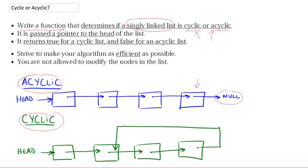So you're being passed a pointer to the head of the linked list which you have to analyze. This allows you to actually determine the position of the linked list, so we're passing you the linked list itself. And you're supposed to return true if it's a cyclic list and false if it's an acyclic list.